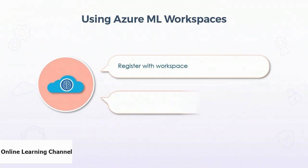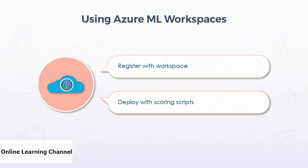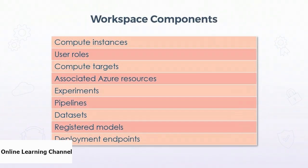Registering a model gives it a name and starts the versioning process. After that, you can deploy your model over and over again, and each time you deploy it you're creating a new version. Each version is then available to consumers so they can use whichever version they prefer. Ideally, each version is deployed with scoring scripts so consumers can see some of the metrics about that particular version and choose the best one for them.